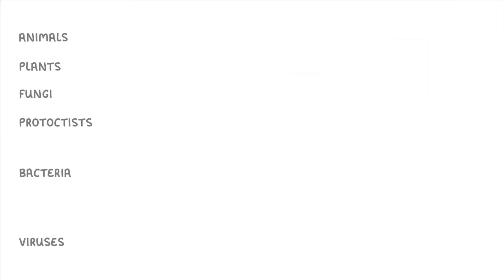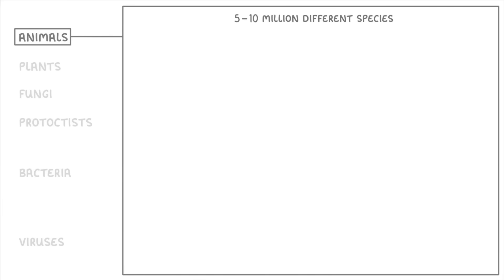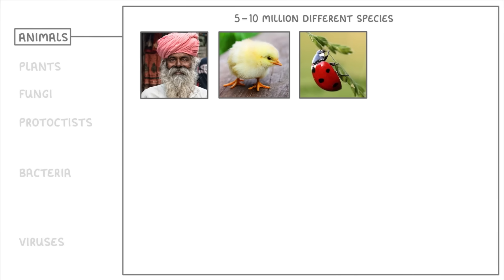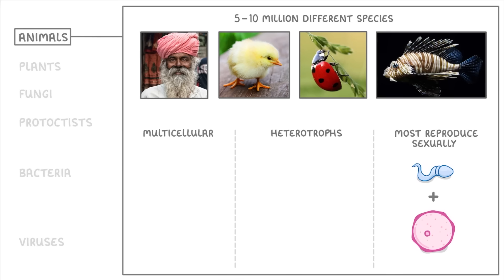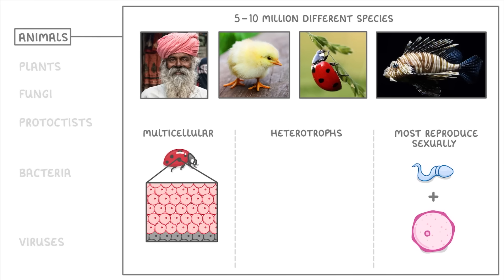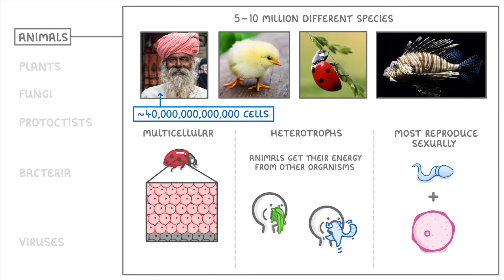Let's now run through all of these groups one by one, starting with animals. You probably know this kingdom pretty well — our best estimate is that there are somewhere between 5 and 10 million different species of animals on Earth, ranging from humans, to chickens, to ladybirds, to lionfish. What all animals have in common is that they're multicellular, they're heterotrophs, and most of them reproduce sexually. Multicellular means each individual organism is made up of lots of cells — an adult human is made up of around 40 trillion. Heterotrophs means animals have to get their energy from other organisms, such as by eating plants or other animals.